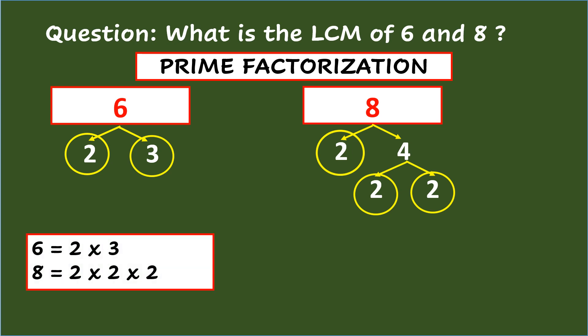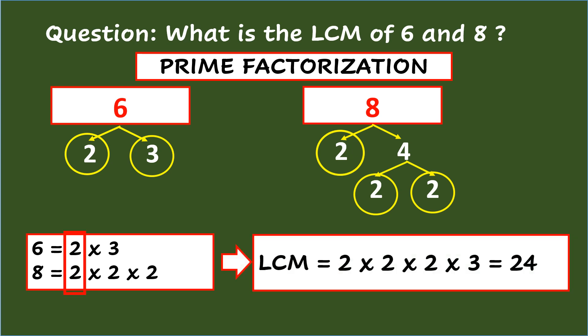Therefore, the prime factors of 6 are 2 times 3, and for 8, 2 times 2 times 2. In this list of prime factors, you can see a pair of common prime factors, and that is 2. Finally, multiply the prime number common to the set together with the rest of the prime factors in the list of factors. So, you'll have 2 times 2 times 2 times 3 equals 24, and that is the LCM of 6 and 8.